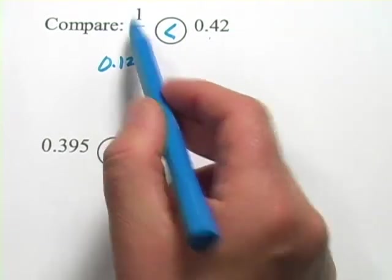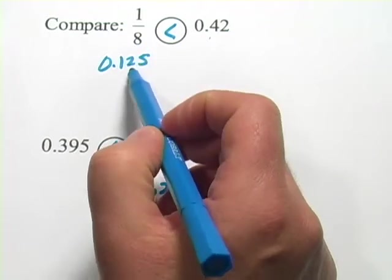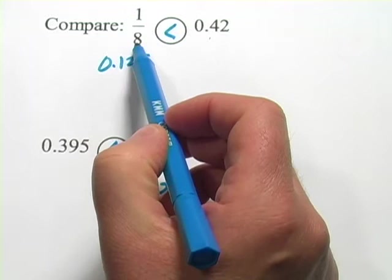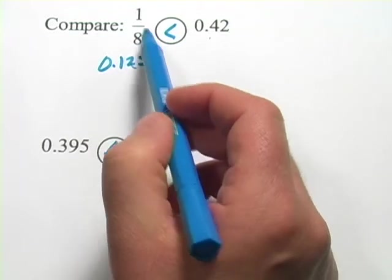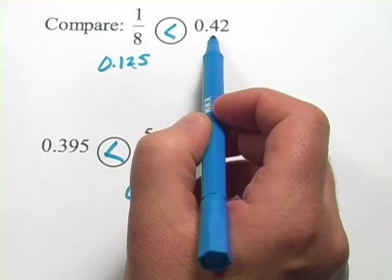When the number on the top of your fraction is small and the number on the bottom is big, those fractions tend to be pretty small. And in eighths, to get close to one half, you'd have to be at four eighths. That would be one half. This number, 0.42, that's pretty close to one half.